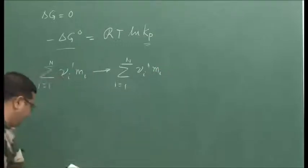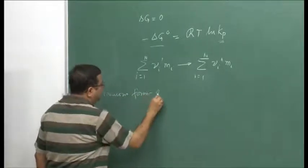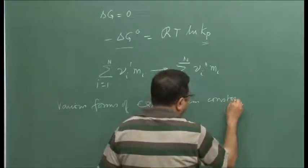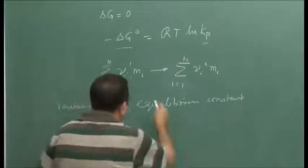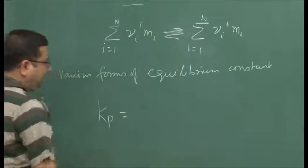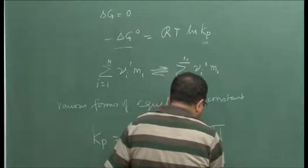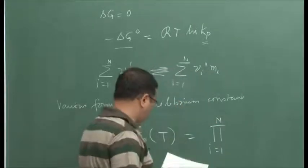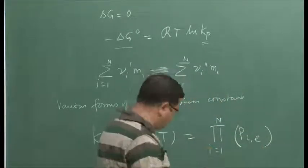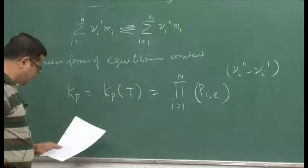This is our generic chemical reaction. We are now going to talk about various forms of equilibrium constant for this generic chemical reaction at equilibrium. First, Kp — we have defined Kp. We know that Kp is a function of temperature, defined as the product over all species i from 1 to n of the partial pressure at equilibrium raised to the power of the difference in stoichiometric coefficient.